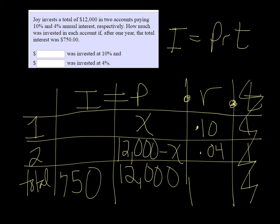So say for instance, she put $2,000 in one account, in the first account, then she must put $10,000 in the other, because they have to add up to equal $12,000. So algebraically we let the unknown amount be x. The other unknown amount would be $12,000 minus that amount.